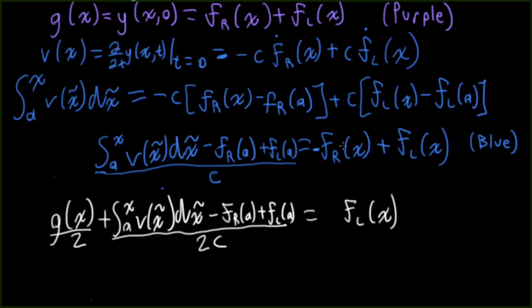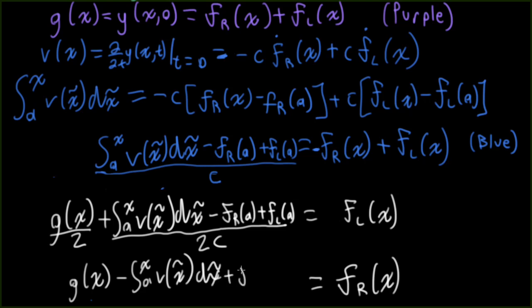Now let me subtract the two equations. If I subtract the blue equation from the purple equation, on the right, the fls cancel. But when I take fr x minus minus fr x, I wind up with a two fr x on the right. And I know I'm going to divide by two eventually. So let me just go ahead and do that. So there's a two fr x, but I'm going to divide both sides by two. So then what is left on the left? I have g x minus all of this stuff. And then all of this stuff is going to be divided by two c here. And then it'll be divided by two here.